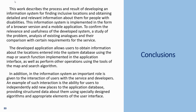Conclusions. This part describes the process and result of developing an information system for finding inclusive locations and obtaining detailed and relevant information about them for people with disabilities. The system is implemented as both a browser version and a mobile application. A study of the problem, analysis of existing analogues, and their comparison with requirements were conducted. The application allows users to obtain information about locations using a map or search function, and users can independently add new places to the database using specially designed algorithms and user interface elements.